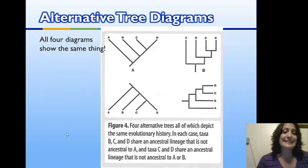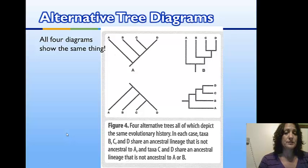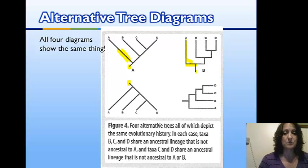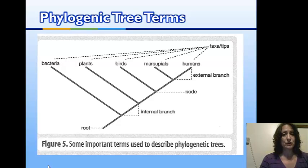When looking at these trees, it doesn't matter the orientation. All four of these trees show exactly the same thing — the same evolutionary history. It doesn't matter whether the ancestral species is at the bottom or the top, or whether we use straight lines on an angle or go out and then off. We can put it upside down or sideways. It doesn't make any difference; it's still showing the same evolutionary history.